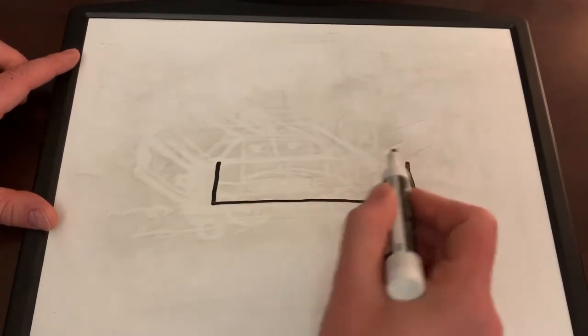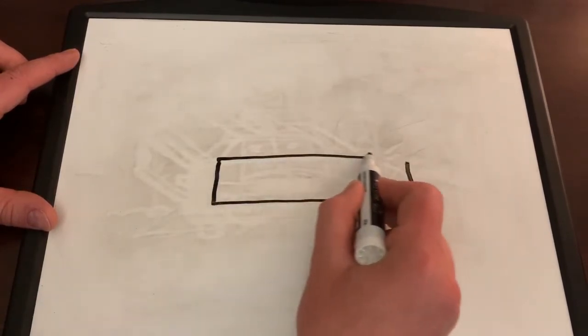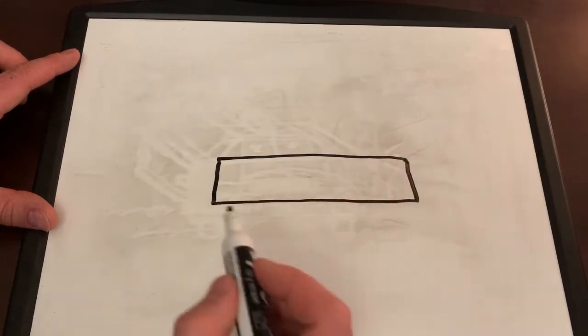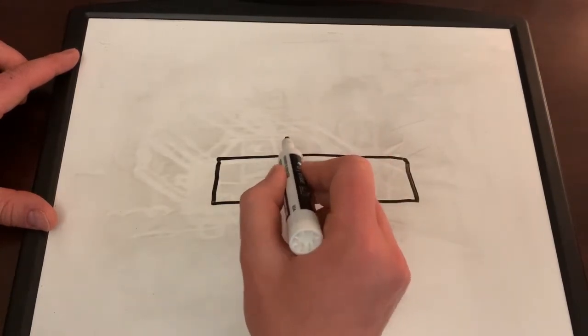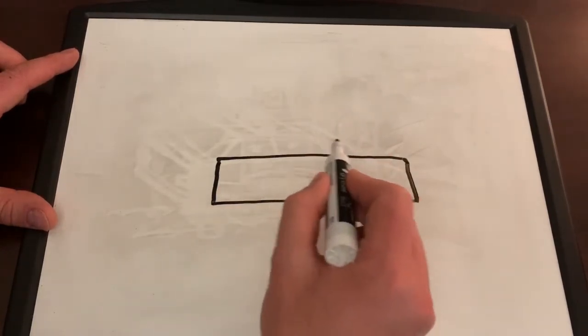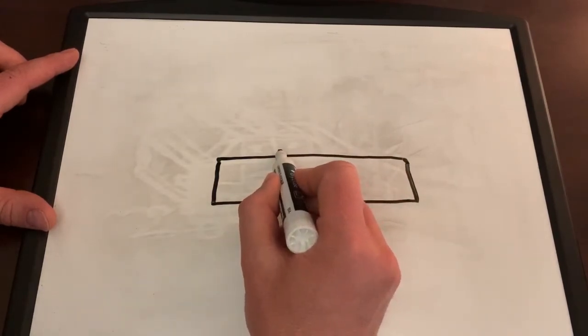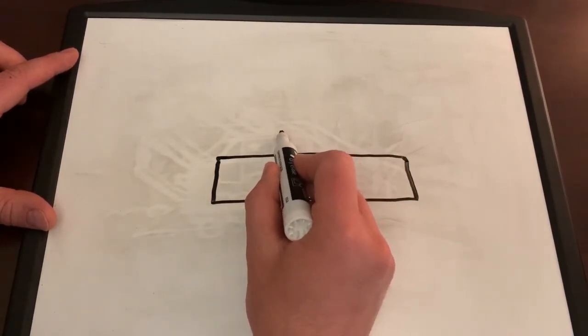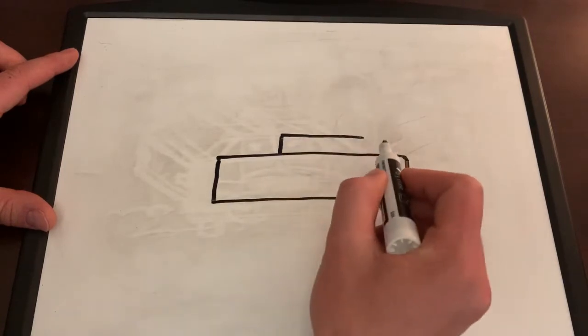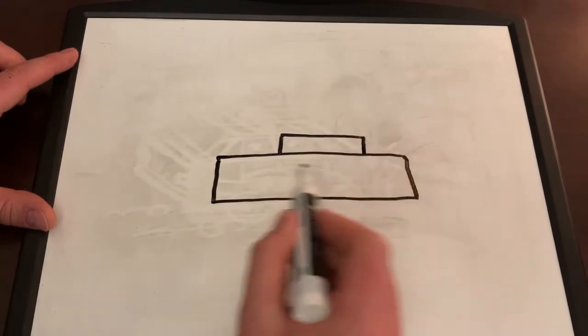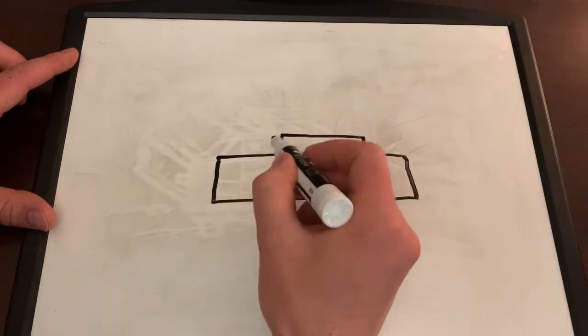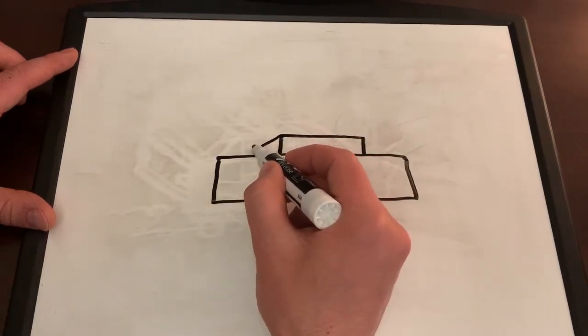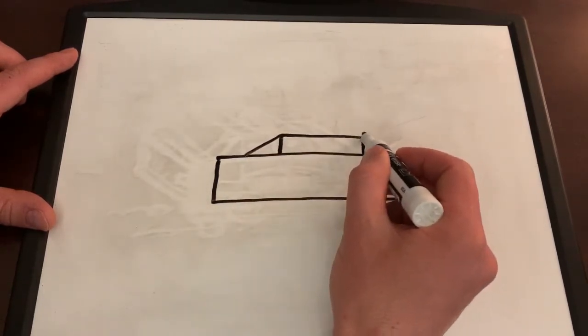So we're going to start by drawing a rectangle here. You can see this is going to be the body of the car, the main part of the car. Then I'm going to draw a second rectangle on top, just a little bit off to one side, because I like to have the hood of the car be a little longer than the trunk part of the car.